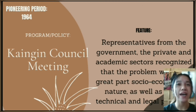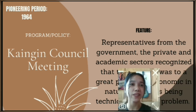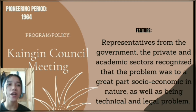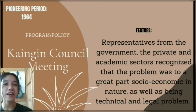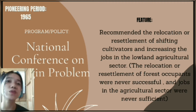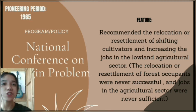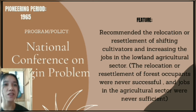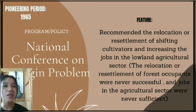The pioneering period began in 1964 with the Kaingin Council Meeting, where representatives from the government, private, and academic sectors recognized that the problem was to a great part socio-economic in nature, as well as a technical and legal problem. In 1965, the National Conference on the Kaingin Problem recommended the relocation or resettlement of shifting cultivators and increasing jobs in the lowland agriculture sector, though relocation was never successful and jobs were never sufficient.